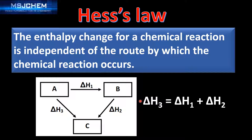In equation form, delta H3, which is going straight from A to C, is equal to delta H1, which is A to B, plus delta H2, which is B to C. So whichever route we take to make our final product C, the enthalpy change is the same.